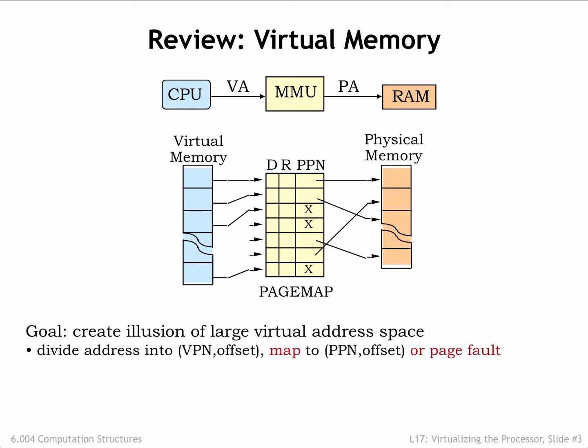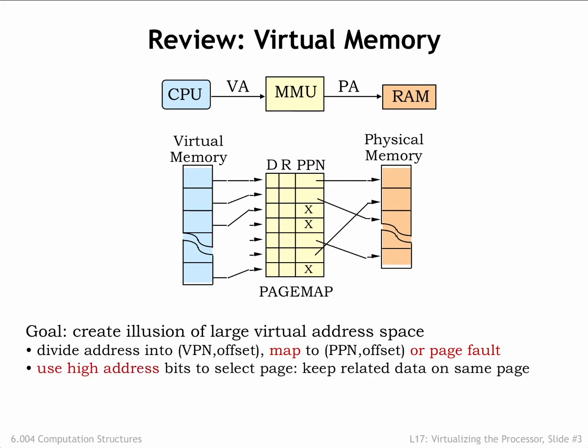Both the virtual and physical address spaces are divided into a sequence of pages, each holding some fixed number of locations. For example, if each page holds 2 to the 12th bytes, a 32-bit address would have 2 to the 32 divided by 2 to the 12th, or 2 to the 20th pages. The 32-bit address can be thought of as having two fields: a 20-bit page number formed from the high-order address bits and a 12-bit page offset formed from the low-order address bits. This arrangement ensures that nearby data will be located on the same page.